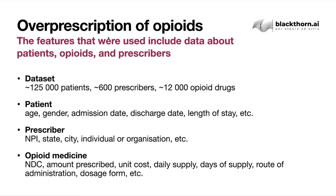For prescribers, we used their identification number, state, city of origin, and whether it was an individual or organization. For opioid medicine, we used amount of prescribed medicine, cost of a unit, daily supply and days of supply, as well as route of administration and dosage form.